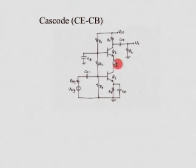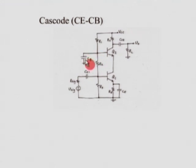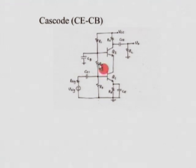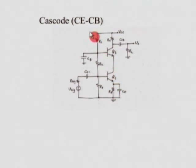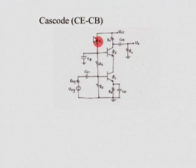We know that in a common base amplifier, the input is between the emitter and base. You can see here that the base terminal is grounded through a capacitor. So for AC, the base terminal of the second transistor is at ground potential, while at the same time it is biased through resistors. So you have proper biasing, and at the same time for AC this is a common base. Because we have the advantage of high frequency response, this cascode gives you almost the same frequency response as a common base stage.